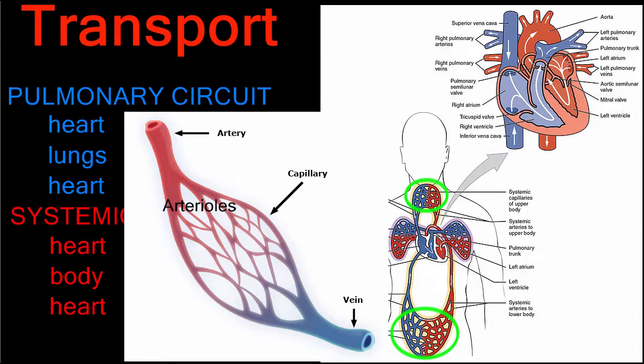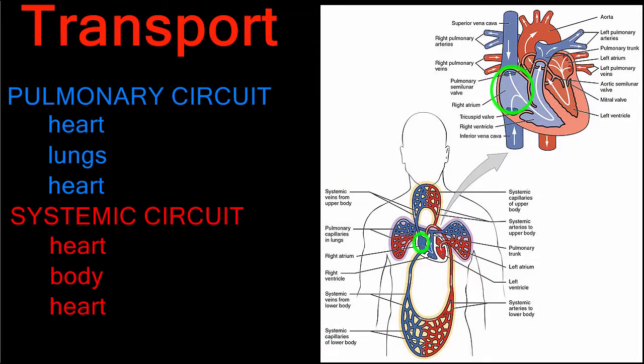The capillaries carry this deoxygenated blood as they merge into venules and then into veins on their way back to the heart. The blood then enters the right atrium of the heart through the inferior and superior vena cava to complete the systemic circuit.